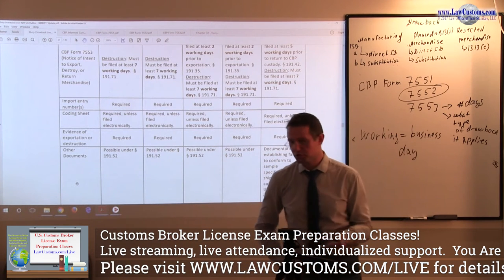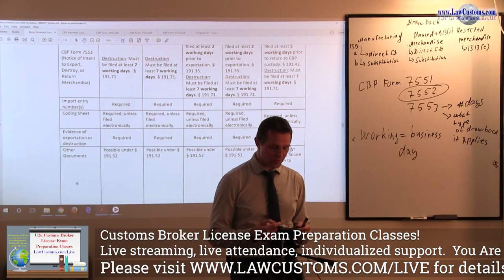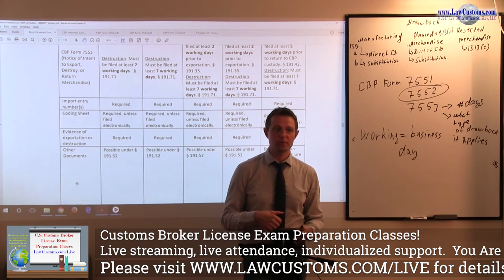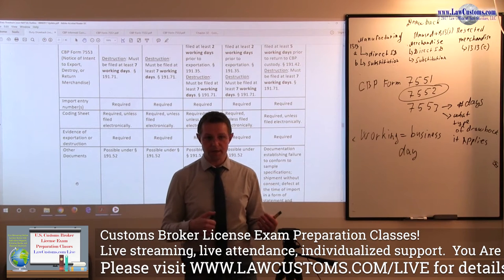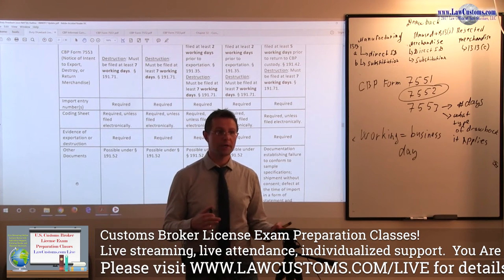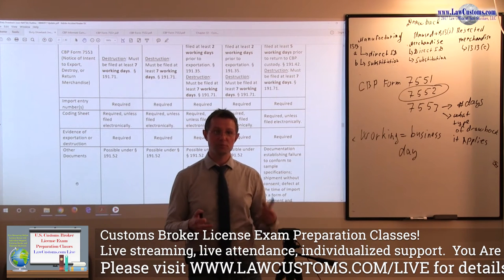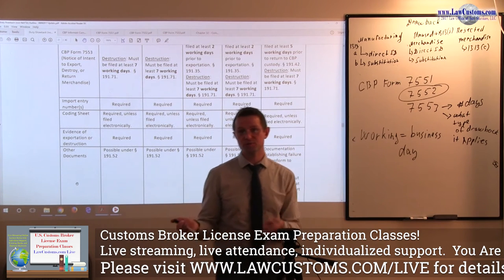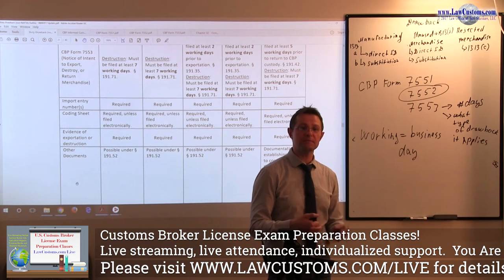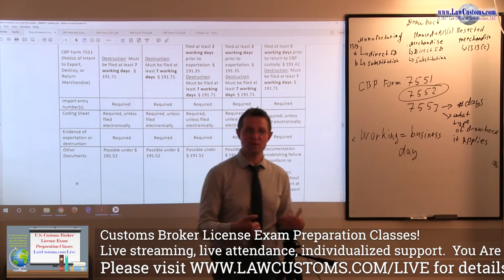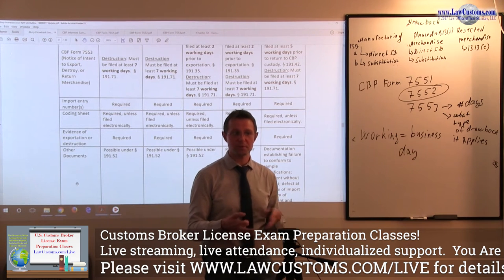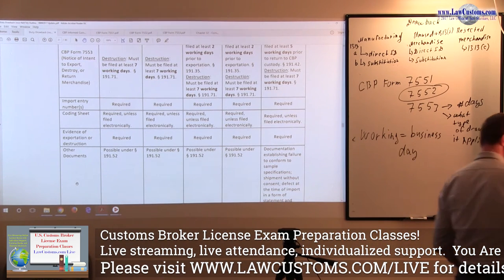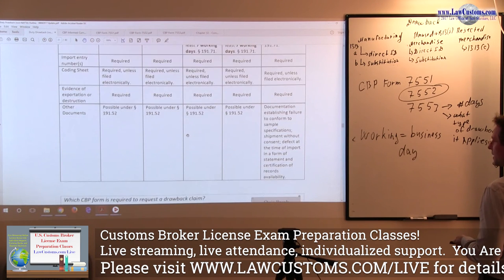Other documents are possible because sometimes customs would like to ask for supporting documentation if they are not satisfied with the basic bare bones application. They can ask for the entry documents, the commercial invoices. Sometimes they can go even further. They would request records that would relate to the fact of the importation by asking for such thing as the timesheet records of the employees who participated in the production of the merchandise which was originally imported. If customs feels like there is more questions to ask because the entry for one reason or another looks suspicious, they reserve the right to do that under section 191.52.